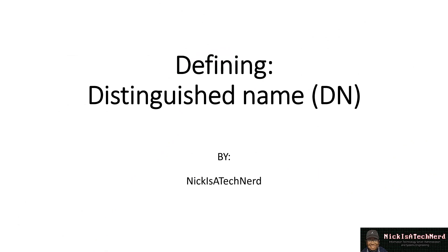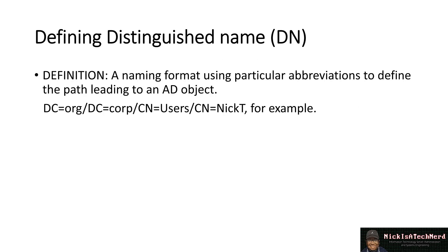Defining Distinguished Name. Distinguished Name can be defined as a naming format using particular abbreviations to define the path leading to an Active Directory AD object. For example: dc equals org, dc equals corp, cn equals users, cn equals nick t. Any attribute defined in the Active Directory schema or established in Active Directory can be used to make up a distinguished name.